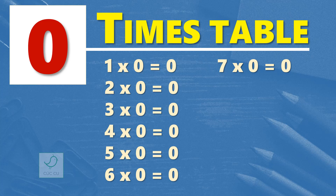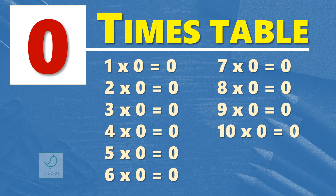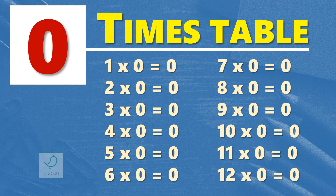8 times 0 is 0. 9 times 0 is 0. 10 times 0 is 0. 11 times 0 is 0. 12 times 0 is 0.